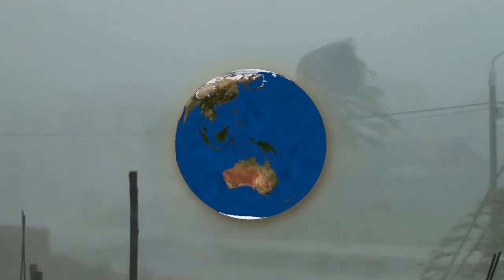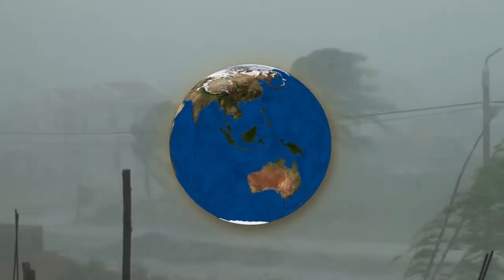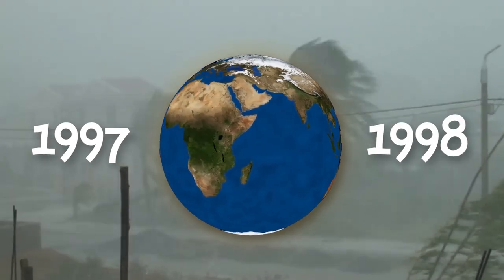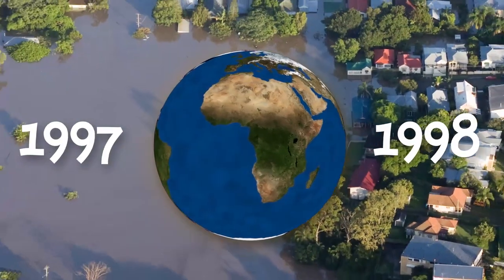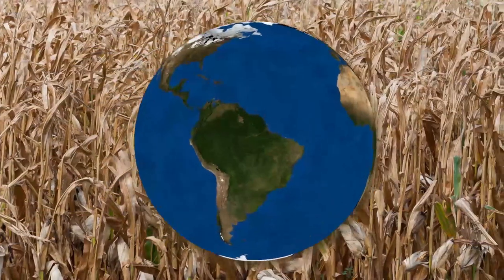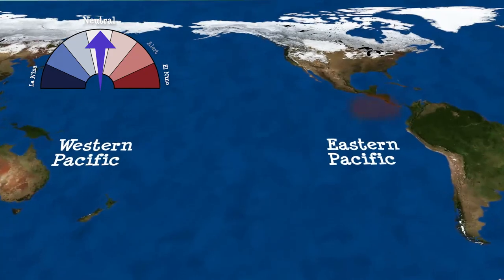But no two El Niños are the same. The strong 1997-98 El Niño impacted every continent in the world, causing widespread devastation worldwide. This story begins in the eastern Pacific.